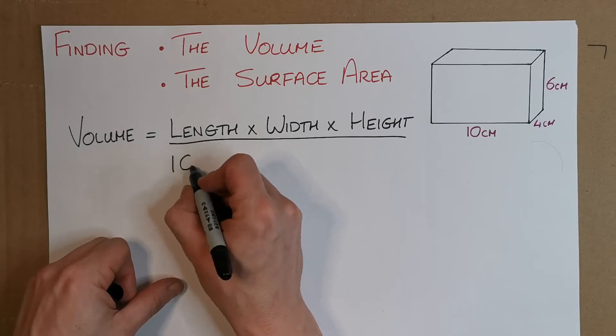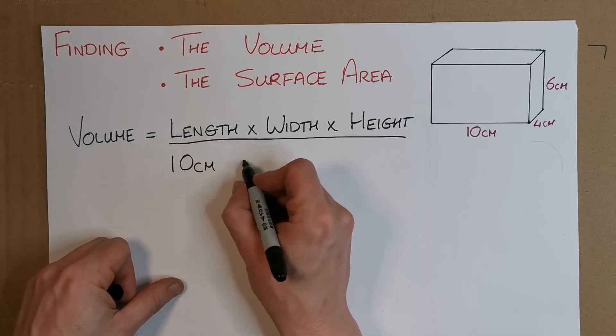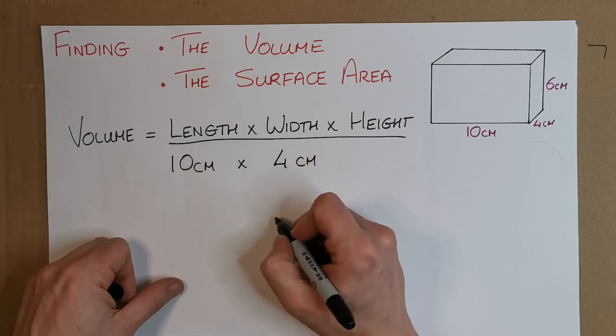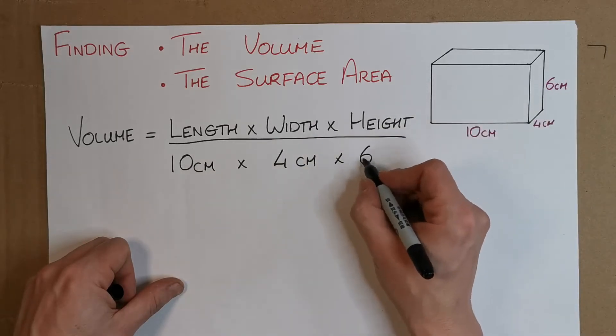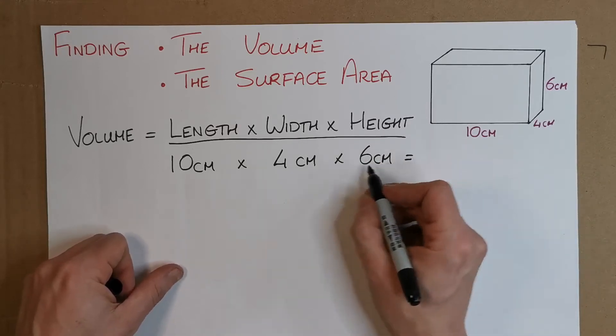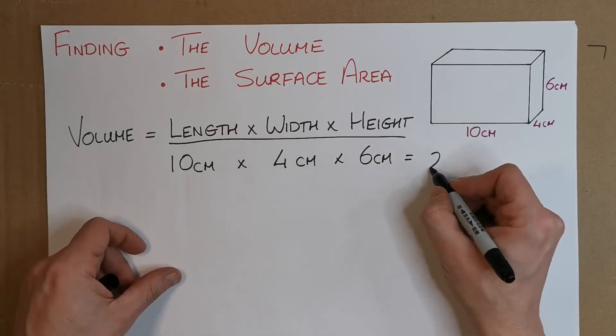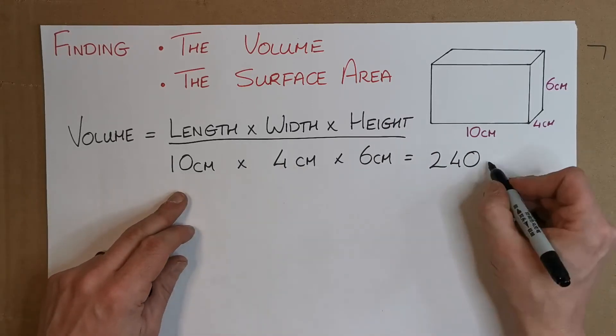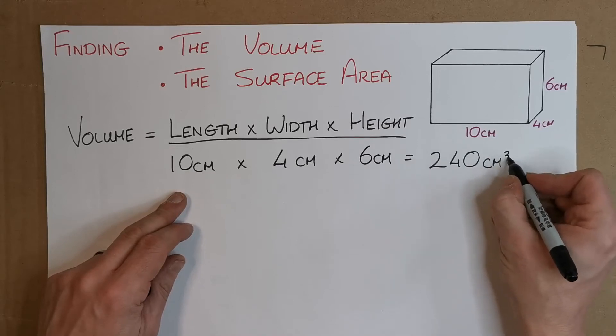So this is going to be a 10 centimeter length, and it's going to be a 4 centimeter width and a 6 centimeter height. So when we look at all that, it looks to be something like 240. Now here's important: it's three measurements of centimeters, so it's centimeters cubed.